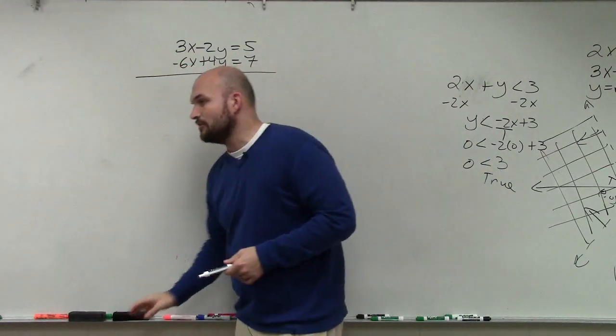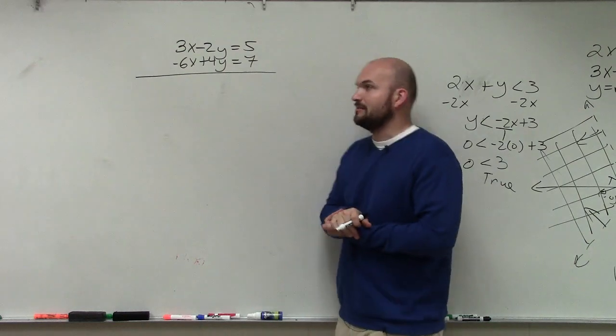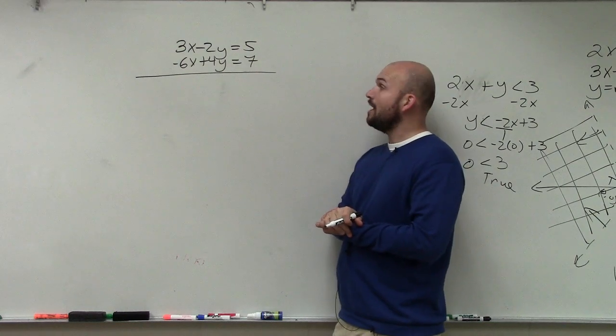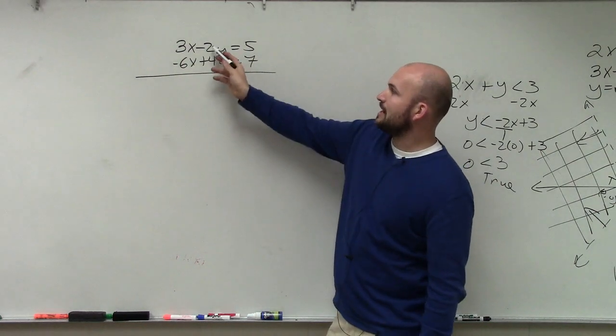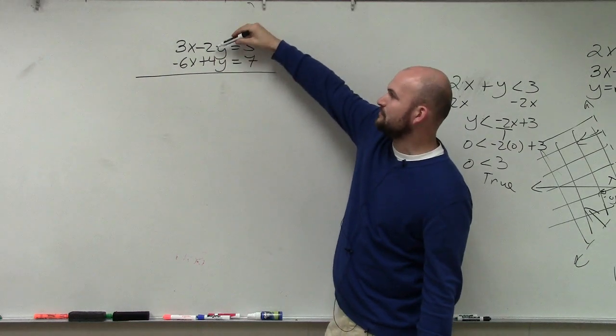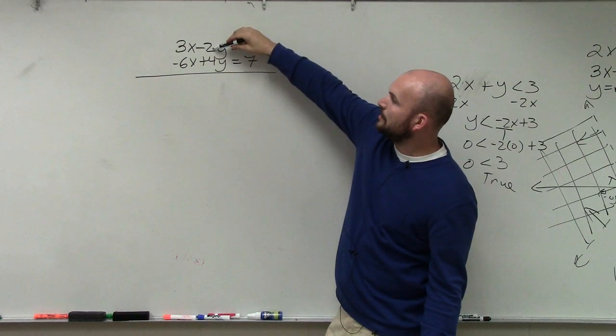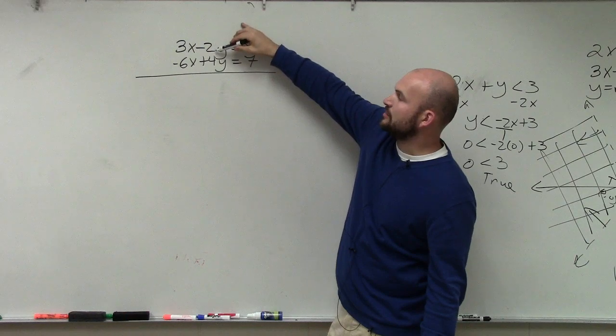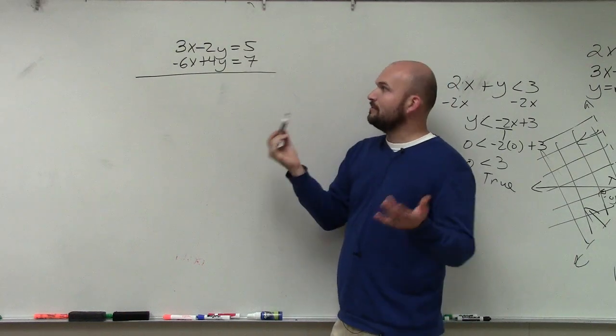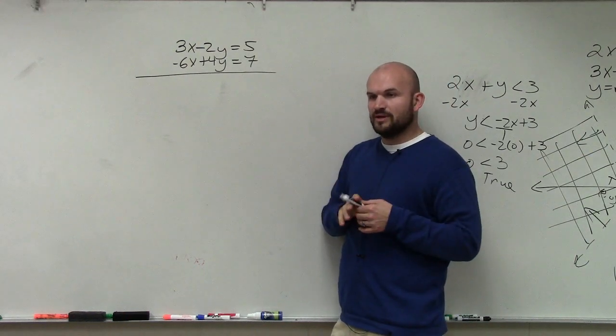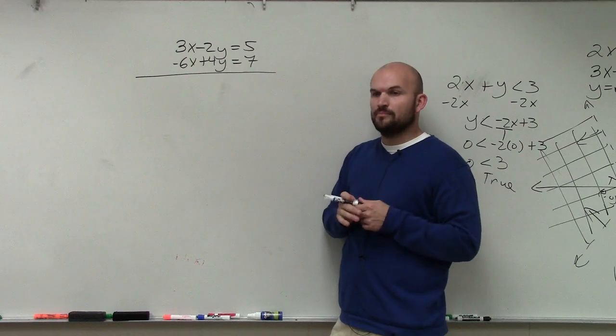So first thing I think is which variable would you guys like to eliminate? The x or the y? Y. Okay. So here you can see that, forget about the negatives for a second. Let's just focus on the absolute value of the number. So I have 2 and 4. So what would be the common multiple of 2 and 4? What is the smallest number that 2 and 4 both divide into?